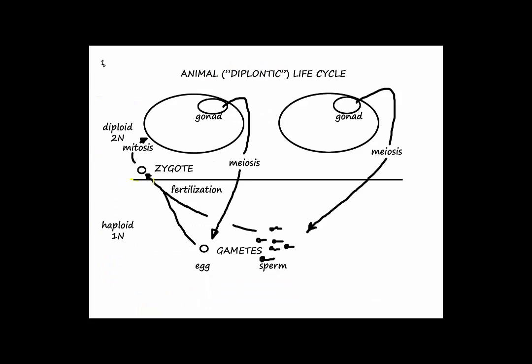Life cycles — we learned three, the goal of which was to fully understand the best of them all: the plant life cycle. The animal life cycle has multicellular diploid individuals, and so it's called diplontic, which produce gametes — eggs and sperm in gonads, ovaries or testes respectively. These haploid gametes fuse together to form a diploid zygote. Animal life cycle — pretty familiar to us.